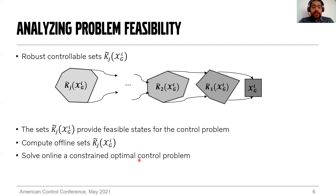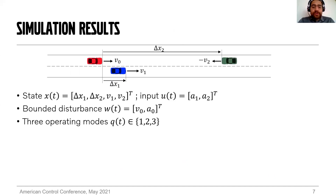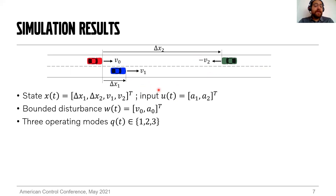We would like to show some simulation results for the test scenario described at the beginning of this presentation. This scenario is designed to test an overtaking function of the vehicle under test in red. We chose the continuous state X to contain the inter-vehicle gaps deltex1 and deltex2, and the longitudinal speeds of the test targets v1 and v2. The control input consists of the two longitudinal accelerations of target one and target two respectively. The disturbance W captures the motion of the vehicle under test, which is controlled externally, including its longitudinal speed and longitudinal acceleration.